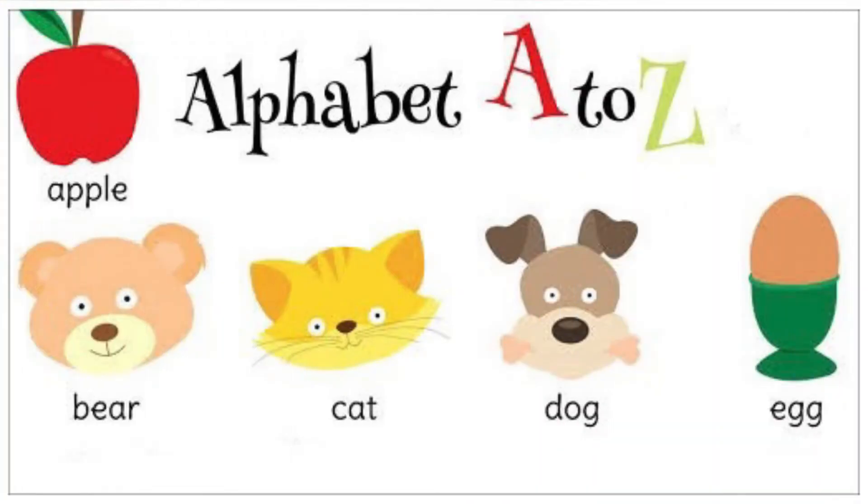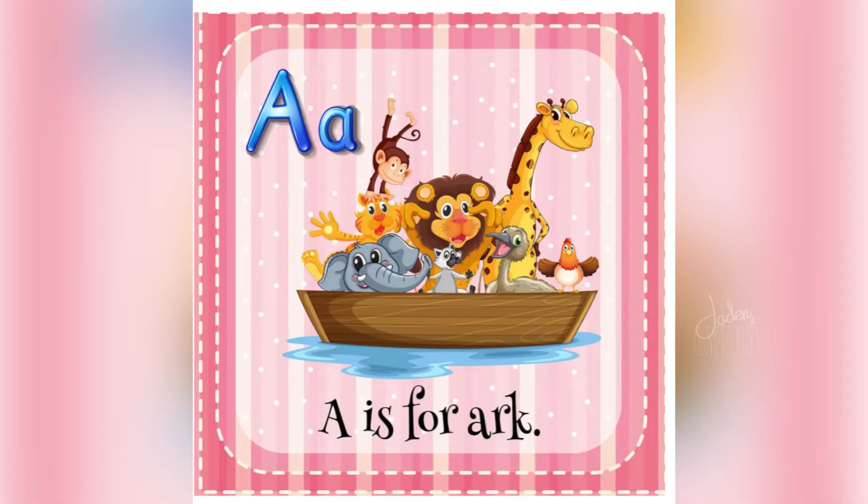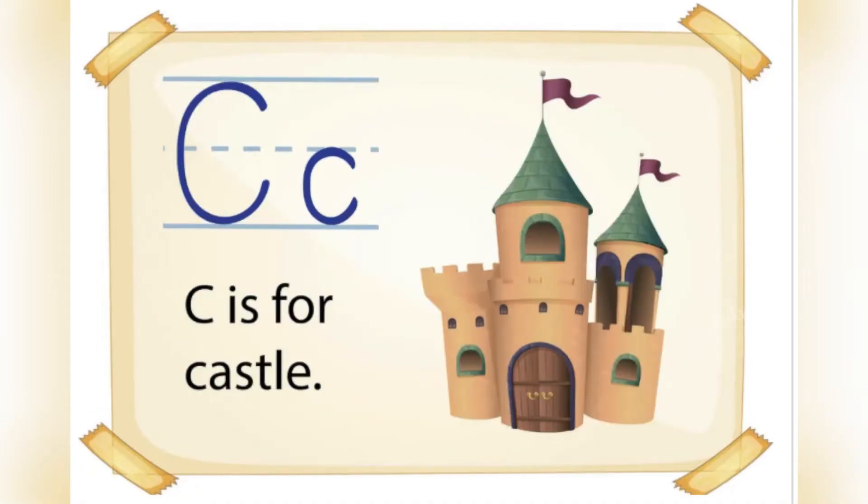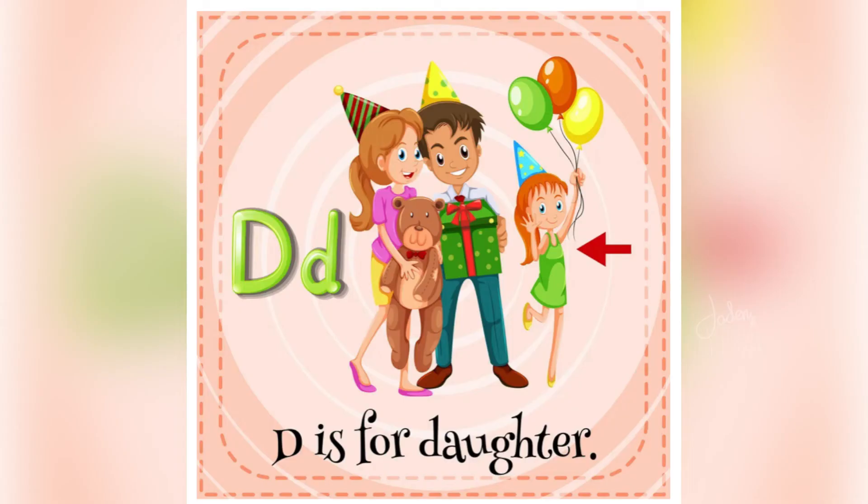Alphabet A to Z. A is for Ark. B is for Balloons. C is for Castle. D is for Daughter.